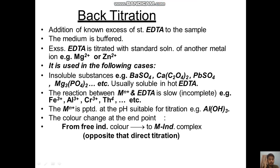Having already explained the direct titration method, we now move to back titration. In back titration, a known excess amount of standard EDTA is added to the sample. The medium is buffered, and the excess EDTA is then titrated with a standard solution of another metal, such as magnesium or zinc.